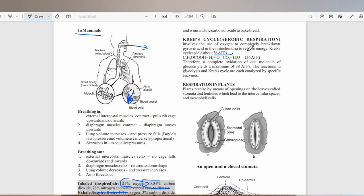Let's talk about the Krebs cycle, which is aerobic respiration. It involves the use of oxygen to completely break down pyruvic acid in the mitochondria to release energy. Krebs cycle yields about 36 ATP. A complete oxidation of one molecule of glucose will yield a maximum of 38 ATP. That's two from glycolysis and 36 from Krebs cycle.